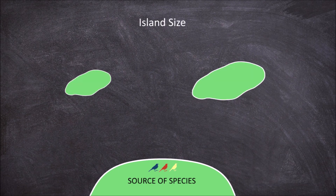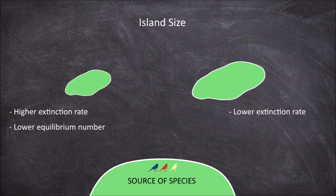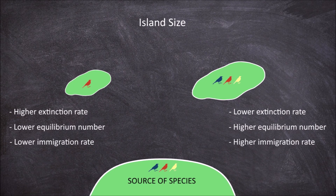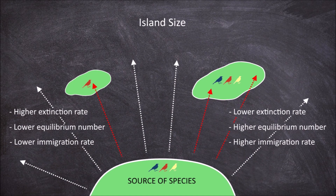Island size is the second factor that affects the equilibrium level. Extinction is higher on smaller islands compared to larger islands, so the equilibrium number of species is smaller on small islands and larger on large islands. This occurs because larger islands have more diverse habitats and larger habitat areas, reducing the chance of extinction through chance events. Immigration rates are also smaller on smaller islands due to the reduced rate of random dispersion to a smaller target.